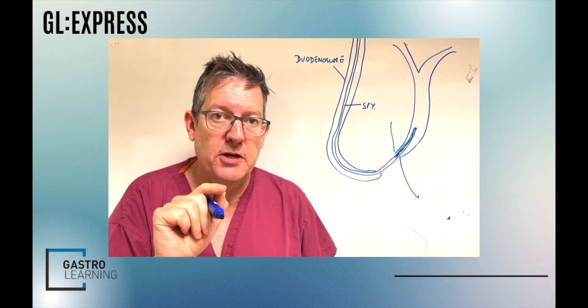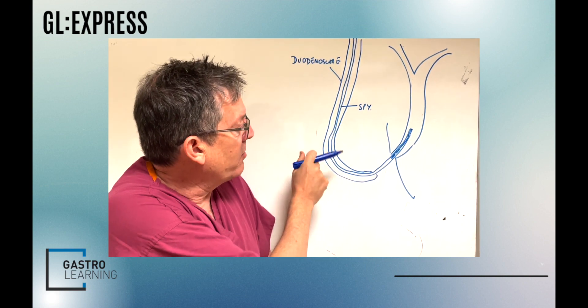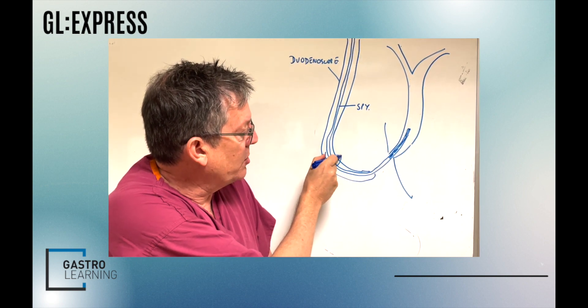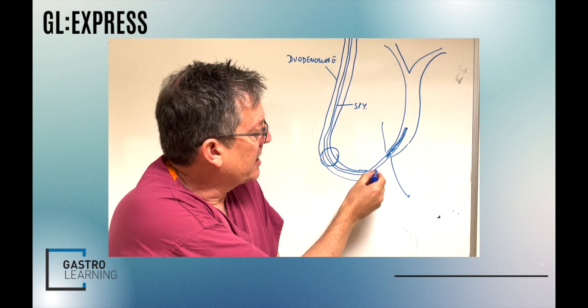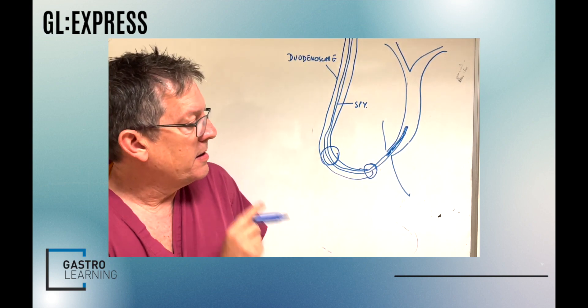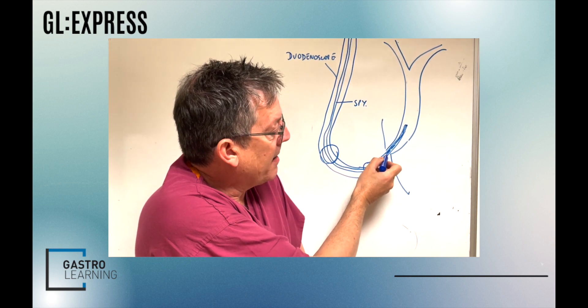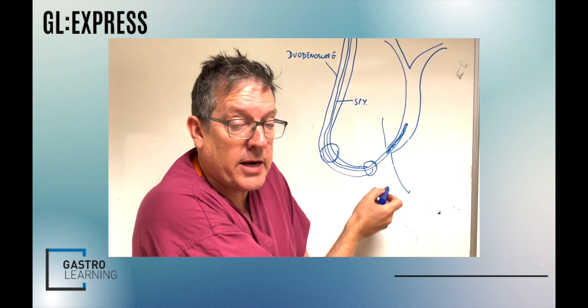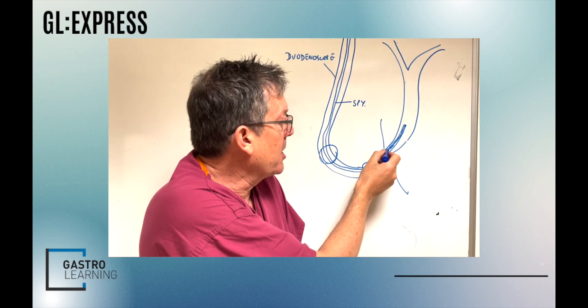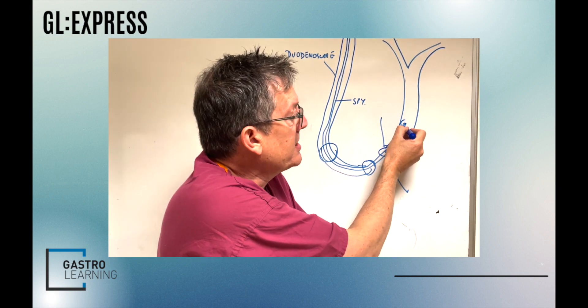At four points: one, going around the bend of the duodenoscope here; two, coming through the bridge; three, this junction between the radio lucent and the more radio opaque tip of the spy scope; and four, just out of the end of the scope.